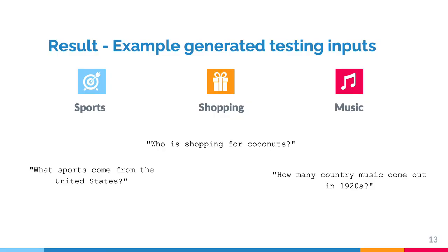These are some example generated testing inputs from the model. In the sports domain, the sentence is: 'What sports come from the United States?' In the shopping domain, the sentence is: 'Who is shopping for coconuts?' In the music domain, the sentence is: 'How many country music come out in the 1920s?' As you can observe from the sentences, some have grammatical errors, but you can understand the meaning of the sentences.